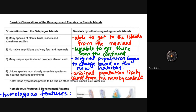I'm going to go through each of the four observations and the hypotheses connected to them in terms of remote islands. The first observation is that many species of plants, birds, insects, and sometimes reptiles exist on the Galapagos and are able to get to the islands from the mainland. Despite their isolation and how far they are from the mainland, there are many such species on the island because they are able to travel between the island and the mainland.